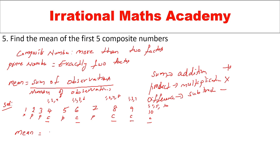Mean is sum of observations by number of observations. So: 4 plus 6 plus 8 plus 9 plus 10 by 5. That gives 37 by 5. The first five composite numbers are counted so the denominator is 5.